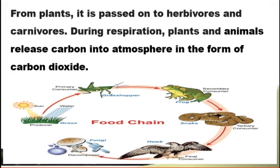The grass-hopper is eaten by a frog, so the carbon present in the grass-hopper moves to the next stage. After that it moves to the next consumer, and eventually a lot of it goes to decomposition. In simple terms: plants pass carbon to herbivores and carnivores.